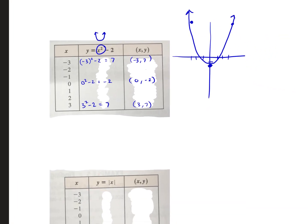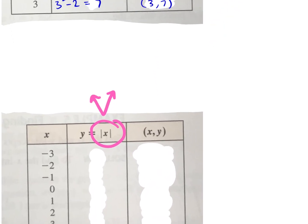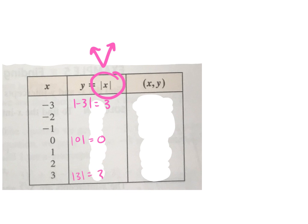What does an absolute value graph look like? It's a V-shape — kind of like a parabola, but instead of a U it's a V, with a sharp point. Absolute value turns the number positive. The absolute value of negative 3 is positive 3, absolute value of 0 is 0, and absolute value of positive 3 is still positive 3. So our points would be (-3, 3), (0, 0), and (3, 3).